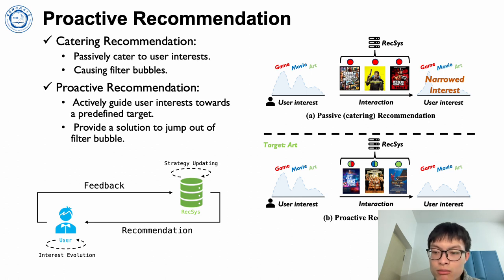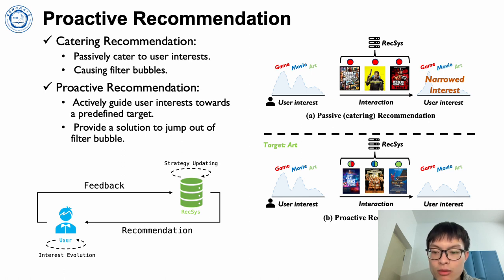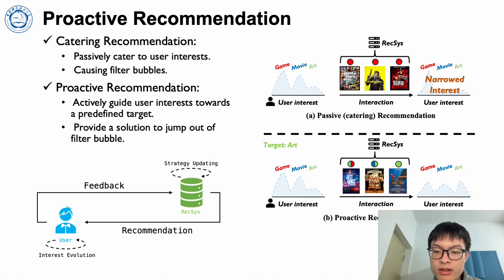However, proactive recommendation actively guides users towards a predefined target item or target topic to jump out of historical interests, based on the assumption that recommended items can affect user interests.